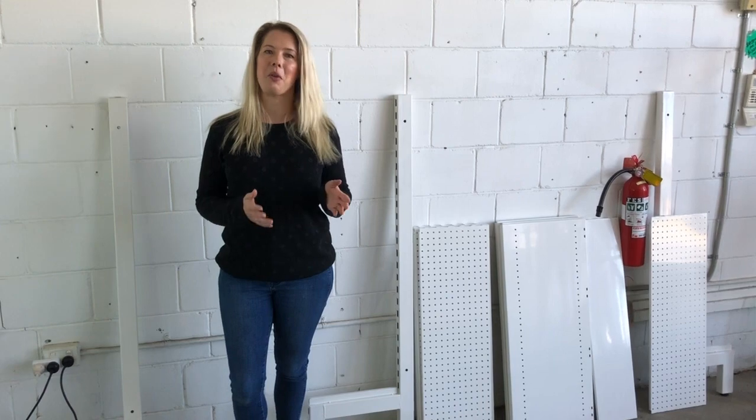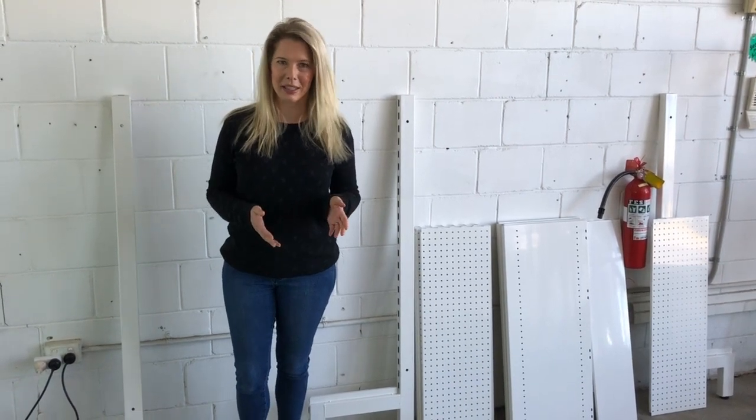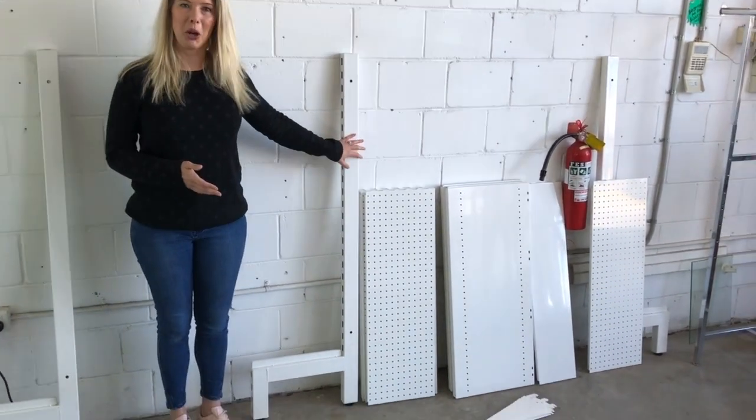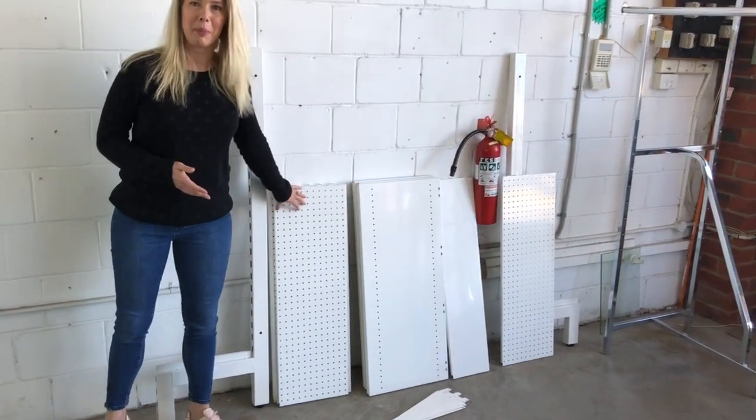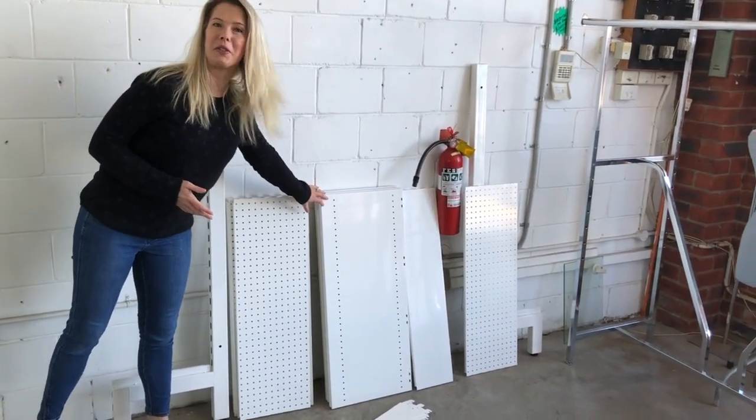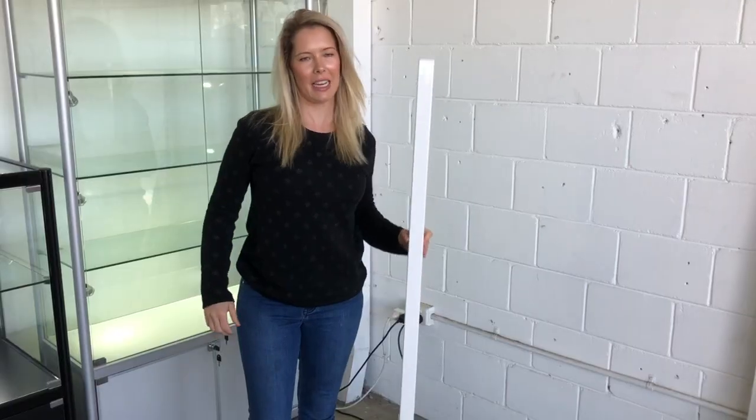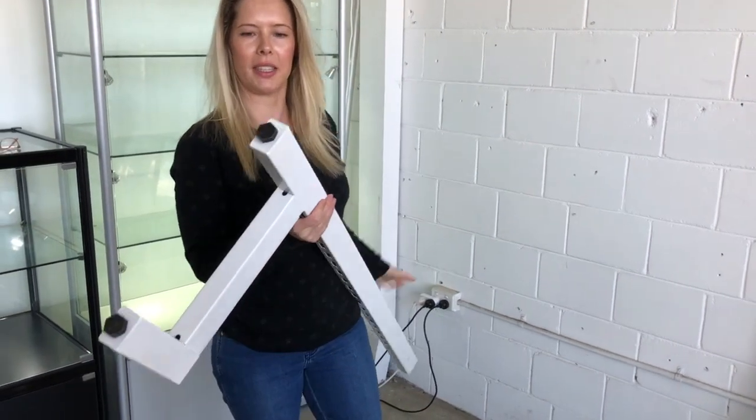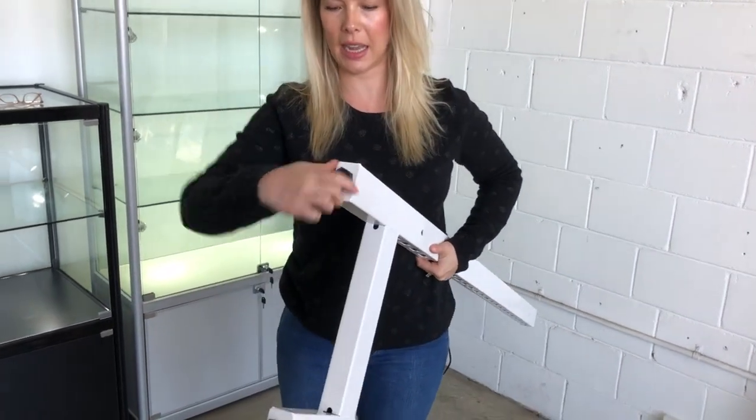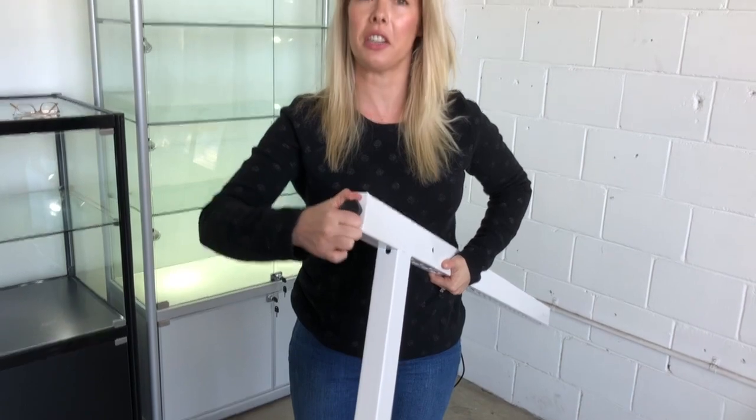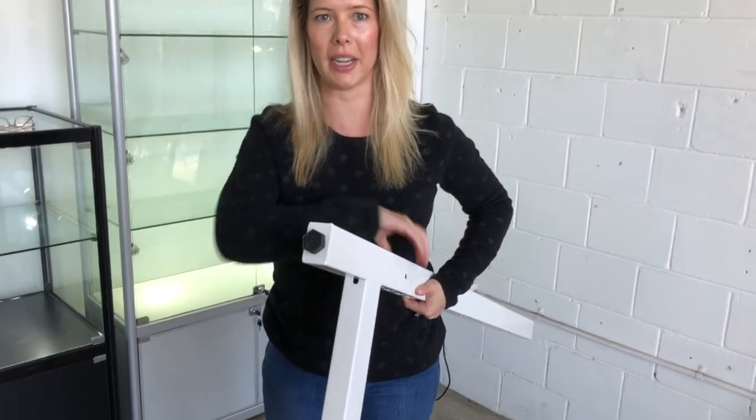To start your assembly, first make sure you have all of your items in order. There are three main components to installing this system: you'll have your posts, you'll have your back panels, and you'll have your shelves and brackets. To start with, take both posts and make sure the feet are completely wound in. Then you can adjust them later if you find that the floor is uneven.